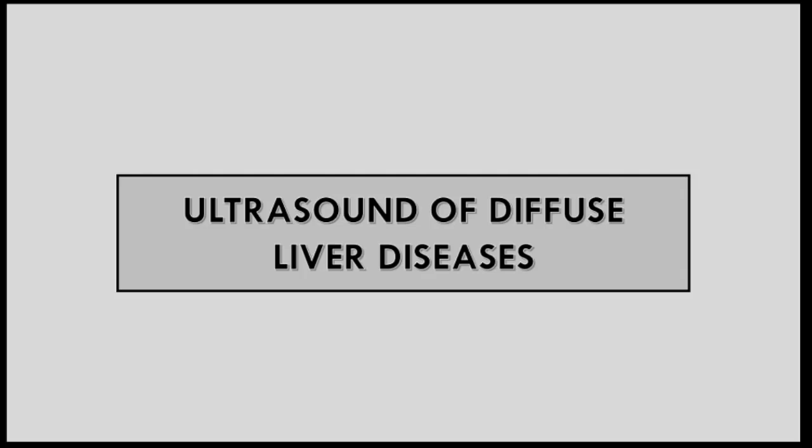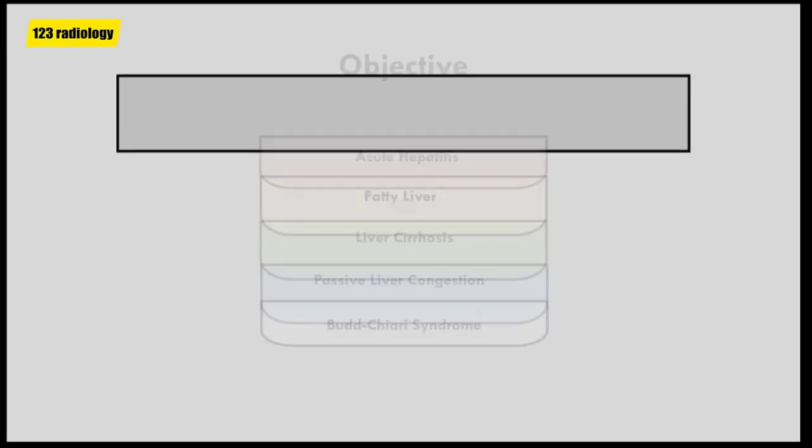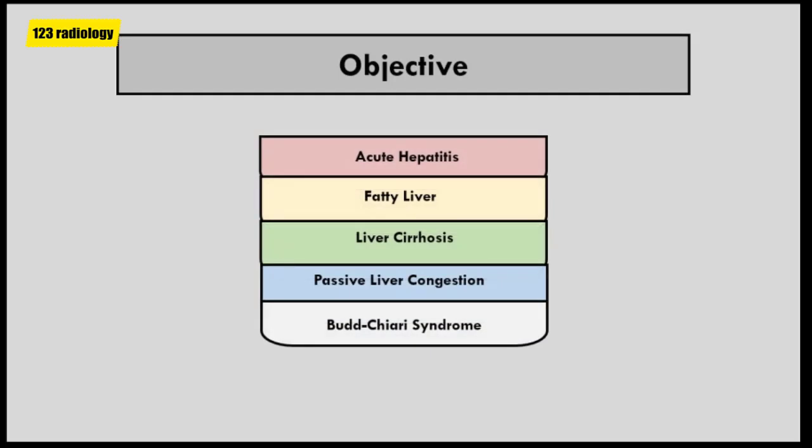Welcome to 123 Radiology Channel. In this lecture, we are going to review ultrasound features of diffuse liver diseases. We're going to discuss the ultrasound features of acute hepatitis, fatty liver disease, liver cirrhosis, passive liver congestion, and Budd-Chiari syndrome.